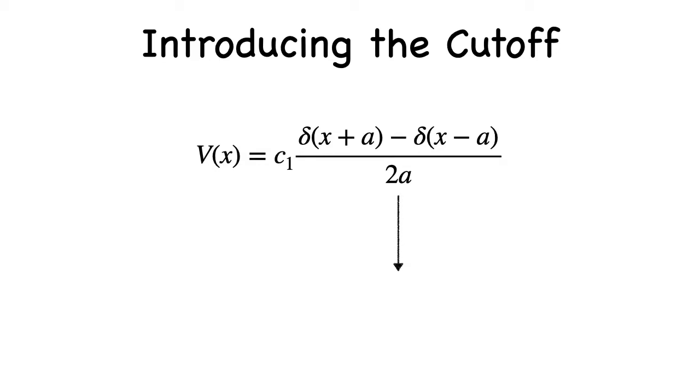And we can approximate our potential now as a difference of delta functions by introducing this parameter a. Now, when we take a to zero, we recover our derivative of delta function. A here is a short distance cutoff, which I've only named suggestively to be the same as the range over which the potential varies, but it doesn't necessarily have to be this length scale. So long as the wavelengths of the quanta we're interested in are sufficiently large in comparison, then a could be anything else.